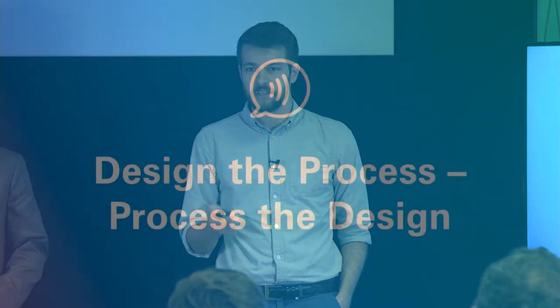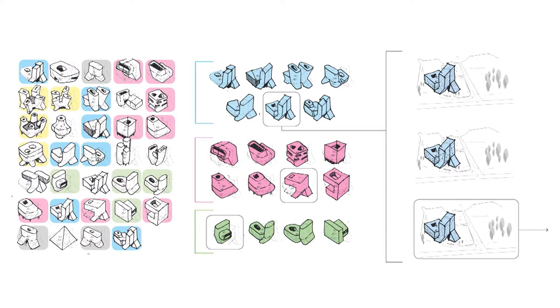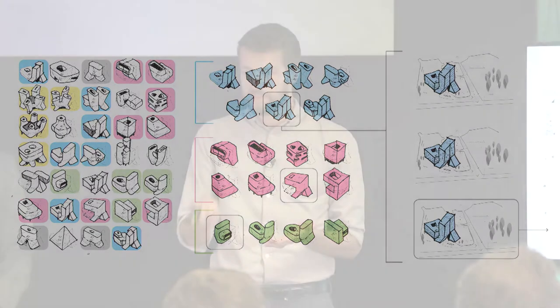All right. So 'design the process, process the design' — it's a clever title with a little bit of wordplay that I can't take any credit for. That's all Jim Brennan. But really what this talk could be called is 'clarity of process for the sake of better architecture.' Imagine a design process that privileges idea generation, design value, and criticality above all else — one that fosters an environment of creativity where the best idea ultimately wins. With a commitment to process, that environment is possible.